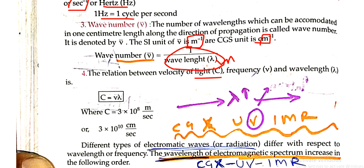The relation between velocity of light, frequency and wavelength is c equal to nu lambda. Wave number is equal to nu by c.